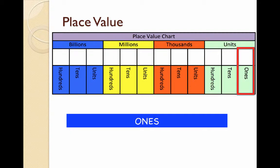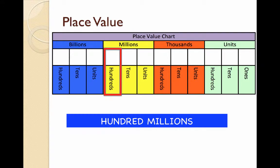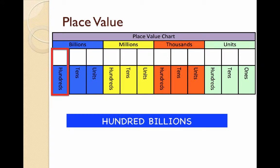Each digit will go into a column. This is the ones column, the tens column, the hundreds column, the thousands column, the ten thousands, the hundred thousands, the millions, the ten millions, the hundred millions, and then the billions, the ten billions, and the hundred billions.